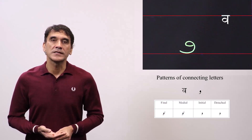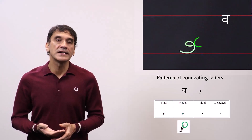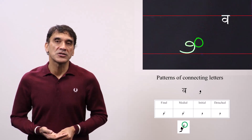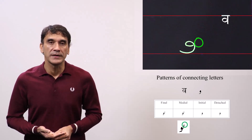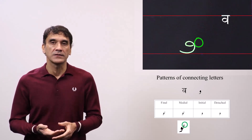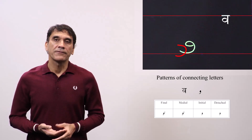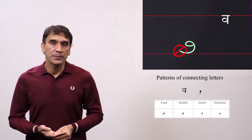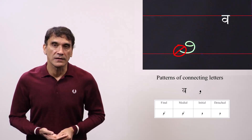Here in this table you see all the forms. The green circle in this picture shows how the previous letter will be attached with the letter vav, and the following letter will not be attached because vav is a non-connected letter.